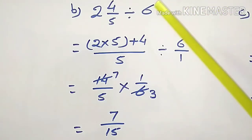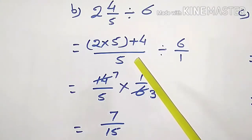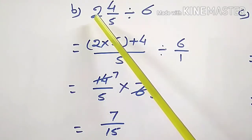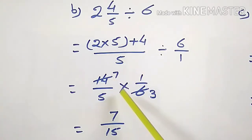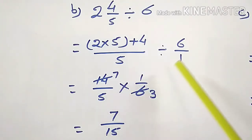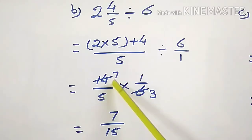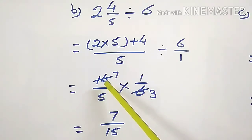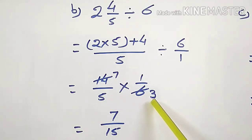Question B: 2 and 4/5 divided by 6. First, convert this mixed number into improper fraction. Multiply the whole number part 2 with the denominator 5 and add numerator 4. So 2 fives are 10, plus 4 is 14/5. Then change the sign of division into multiplication and take reciprocal of 6, which is 1/6. 14 and 6 are both even, so divide by 2: 2 sevens are 14 and 2 threes are 6. No further common factors. Write 7 in the numerator and product of 5 and 3, which is 15, in the denominator. So 7/15 is the answer.